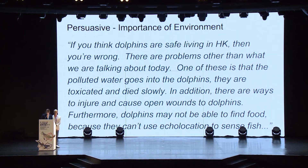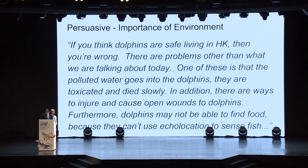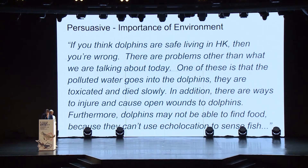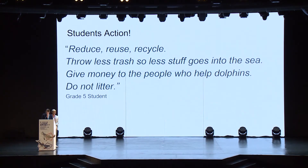Another student took a more popular, environmental approach, writing: 'If you think dolphins are safe living in Hong Kong, then you're wrong. There are problems other than what we're talking about today. One of these is that polluted water goes into the dolphins — they are intoxicated and die slowly. In addition, there are ways to injure and cause open wounds to dolphins. Furthermore, dolphins may not be able to find food because they can't use echolocation to sense fish.' Regardless of the solutions students were making, they drew clear links from the evidence to the research and the issue at hand.